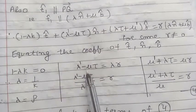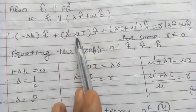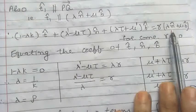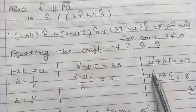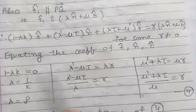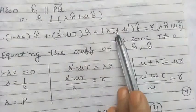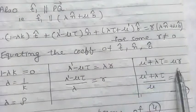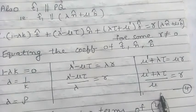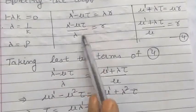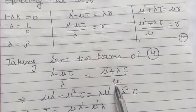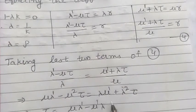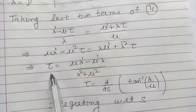Now comparing the coefficients of N cap: the coefficient on the left side is λ dash minus μτ, and on the right side it is γ into λ, so from here we get one value of γ. Comparing the coefficients of B cap on both sides: on the left side the coefficient is μ dash plus λτ, and on the right side it is μ into γ, so from here we obtain another value of γ. Since these two values of γ must be equal, the first value is (λ dash minus μτ) divided by λ, and the second is (μ dash plus λτ) divided by μ.